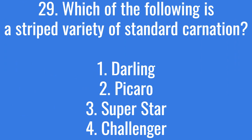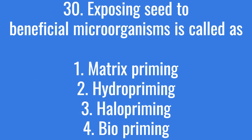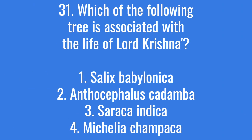Which of the following is a striped variety of standard carnation? The correct answer is option 3: Superstar. Exposing seed to beneficial microorganisms is called? The right answer is option 4: biopriming.